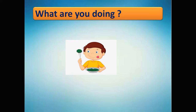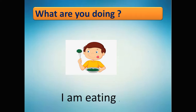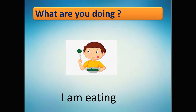Now look at this boy and tell me — when we ask him 'What are you doing?' what will he say? He said: 'I am eating. I am eating.' As we agreed in the grammar of this unit: 'I am,' and after 'am' you add '-ing' to the verb. So the answer is 'I am eating.' Try writing this answer in your notebook or on your paper.